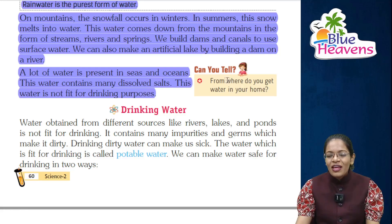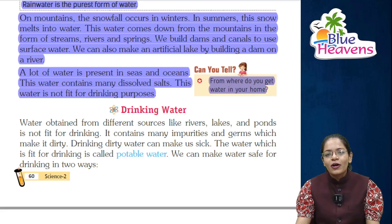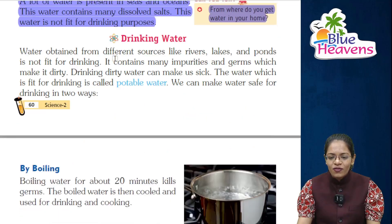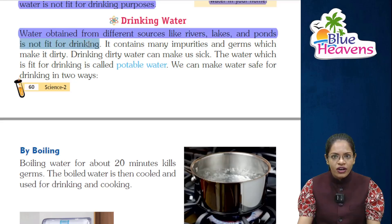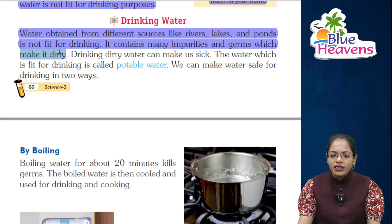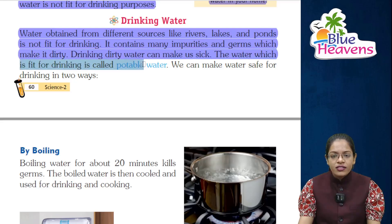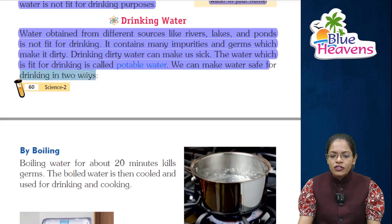Can you tell — from where do you get water in your homes? It comes from taps. Now, next is drinking water. Water obtained from different sources like rivers, lakes, and ponds is not fit for drinking. It contains many impurities and germs which make it dirty. Drinking dirty water can make us sick. The water which is fit for drinking is called potable water. We can make water safe for drinking in two ways.